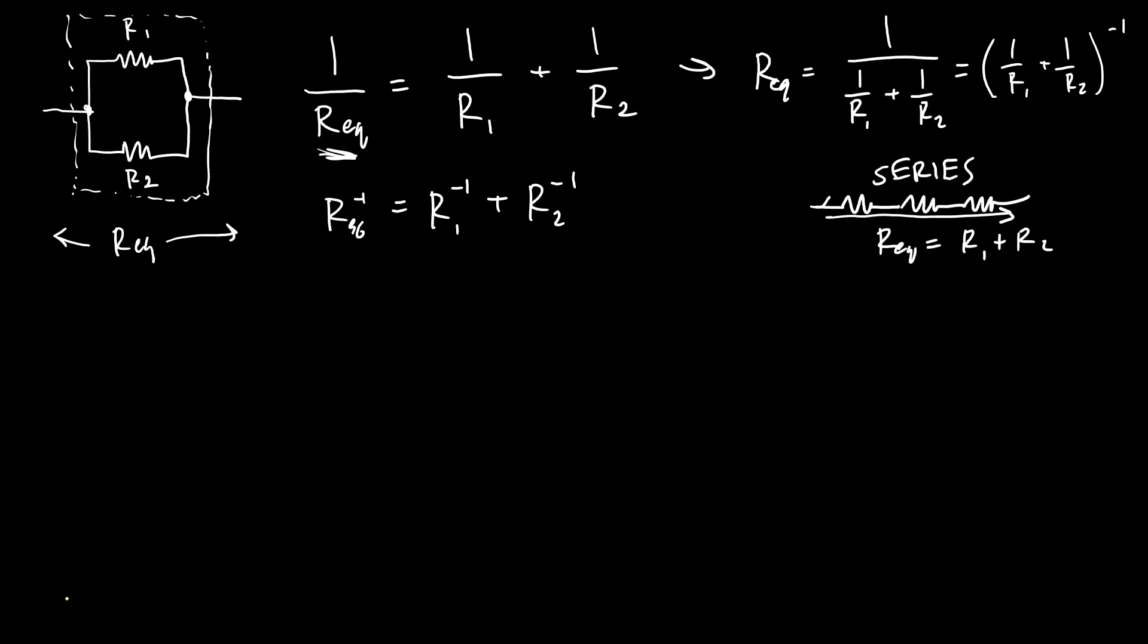But the way to kind of think about this intuitively is when you put them in parallel like this, the current splits. You are giving the current more paths to go through, kind of giving it more options and making it easier for the current to get over here. So the equivalent resistance actually goes down as you add more resistors in parallel.